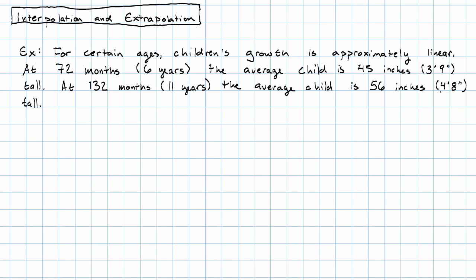We could write the equation of a line that goes through those two points. So our variables are the child's age in months, that's going to be our independent variable, and the child's height in inches, that's going to be our dependent variable.